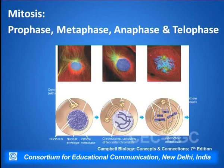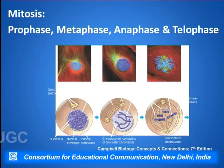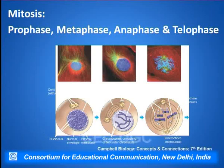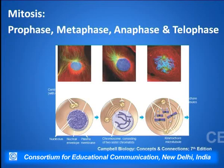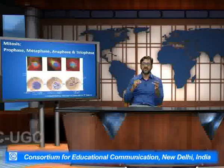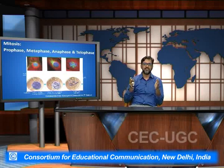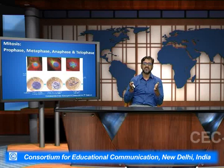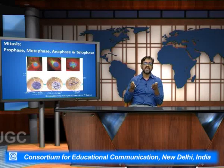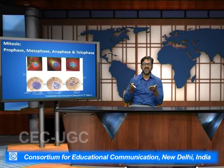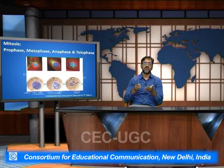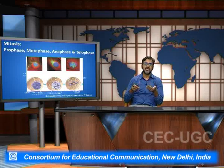In the metaphase, the chromosomes get aligned in the equatorial plane and the spindle fibers, which are formed from the centrioles, come and bind to these metaphase chromosomes at the point of attachment called the centromeres. At the centromeric position there are specialized protein trilaminar structures called kinetochores, which play a very important role in the attachment of the spindle fibers to the centromere.